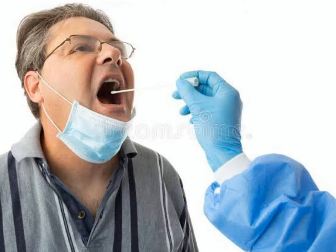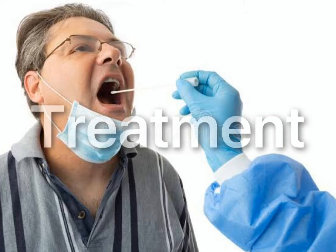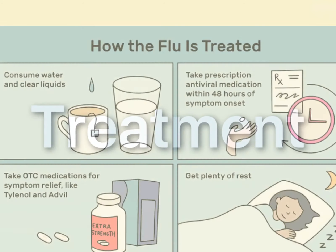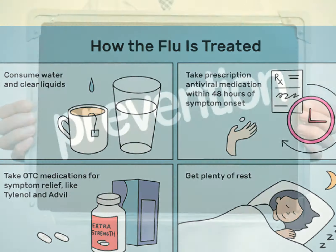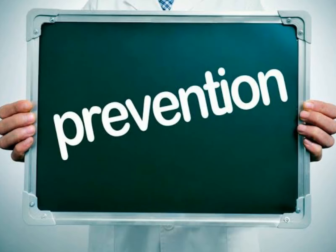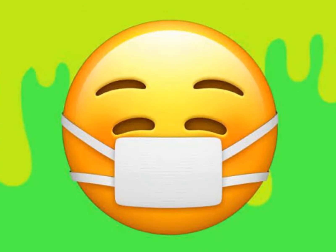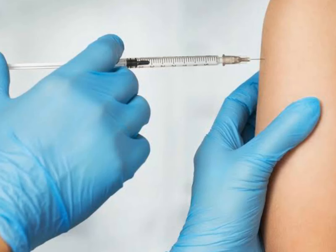Throat swabs are used when other specimens cannot be obtained. Treatment mostly includes resting, drinking plenty of fluids, and oral medication. In severe cases, antiviral drugs are prescribed to reduce severity. Preventive measures like hand washing, face masks, proper animal handling, and vaccination are extremely important to avoid zoonotic influenza outbreaks.